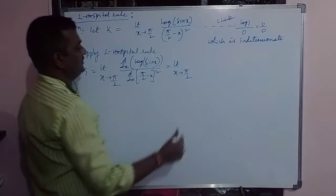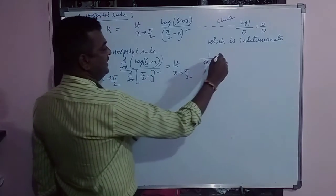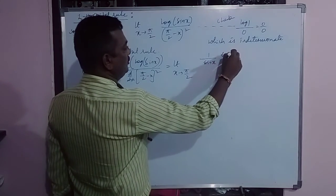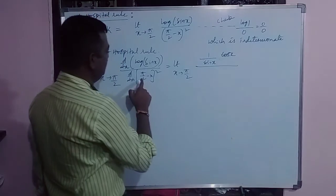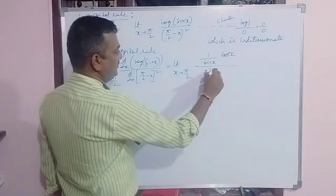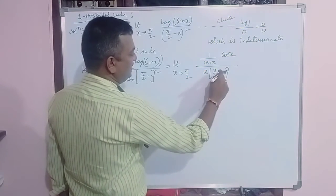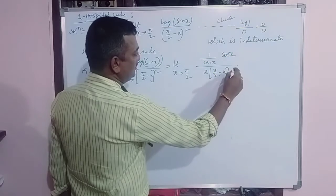Differentiate log of sin x is 1 by sin x. Again, sin x is cos x divided by pi by 2 minus x whole square is 2 times of pi by 2 minus x. Again, pi by 2 is 0, x is minus x is minus 1.